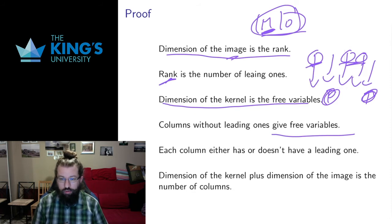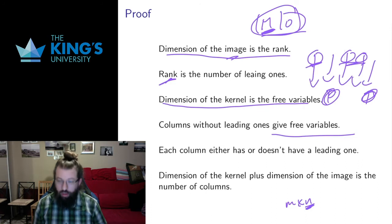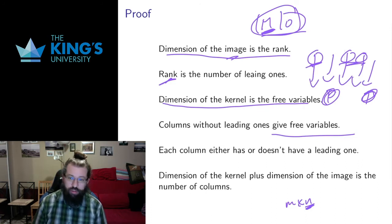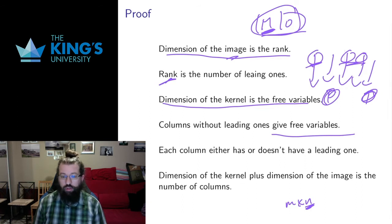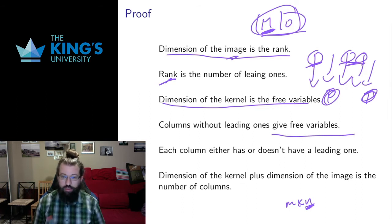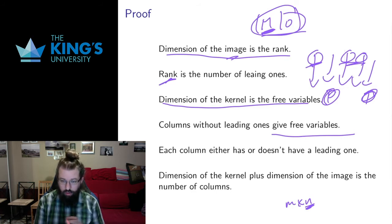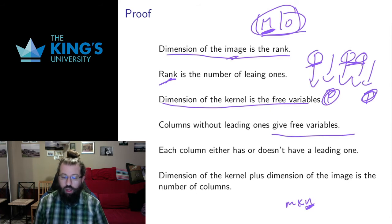The number of columns — this is an m by n matrix — is the second number, n, which is precisely the dimension of the domain. And there you have it: each column either has a leading one, adding to the rank and the dimension of the image, or it doesn't have a leading one, making it a free variable contributing to the dimension of the kernel. Add those two up, we get the number of columns, which is the dimension of the domain of the function.